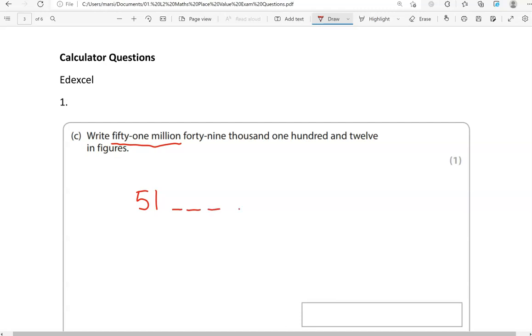So 1, 2, 3, 1, 2, 3. Now 49,000, right? So it's this group here. This is the thousands, this is the ten thousands, and this is the hundred thousands. 49 means that we haven't got hundred thousands. So this here will be filled with a zero. Now we're going to write 49. After that, we have 112. So let's read this number again: 51,049,112.